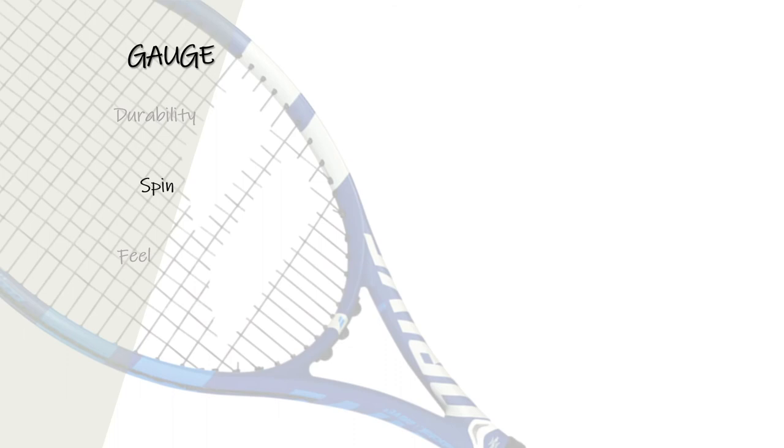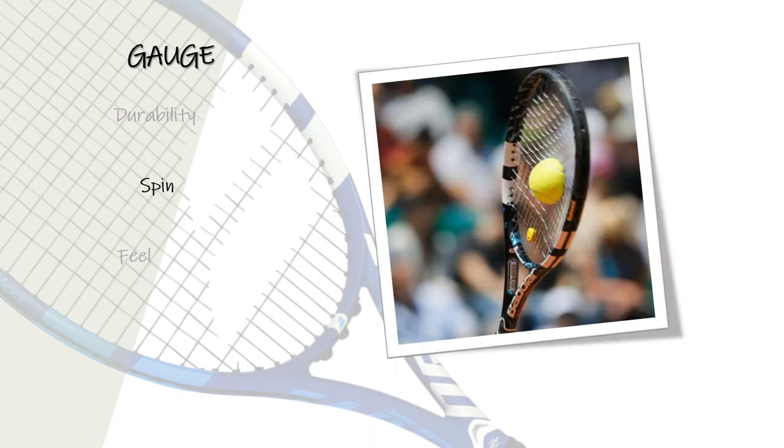Beyond durability, players also rely on string gauge to influence their potential to generate spin. Spin is one of the most important factors when it comes to ball control in the world of tennis. The thinner the string, the greater the potential for rotation, while the thicker the string, the less important it is. Thinner strings sink deeper into the ball and therefore grab the ball, resulting in more spin. Thicker string has less bite, which reduces the potential for spin.